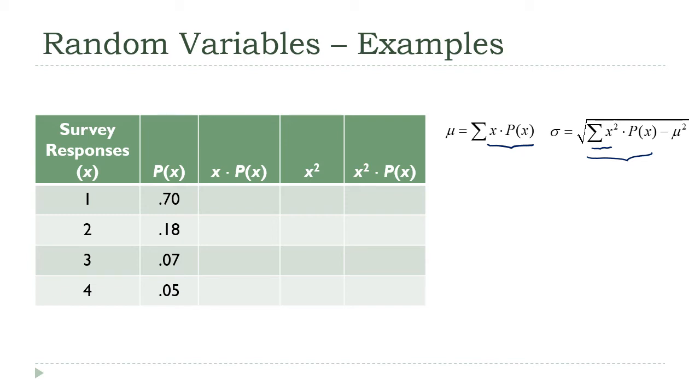So let's do the math here. I'm going to multiply x times p of x. 1 times 0.7 is 0.7. 2 times 0.18 is 0.36. 3 times 0.07 and 4 times 0.05. If I add all of these up, I get 1.47. And that's my mean. The mean is just the sum of these x times p of x values. So that is 1.47.